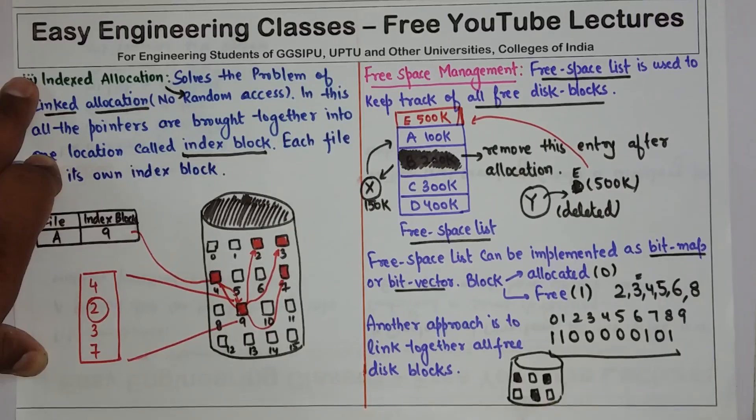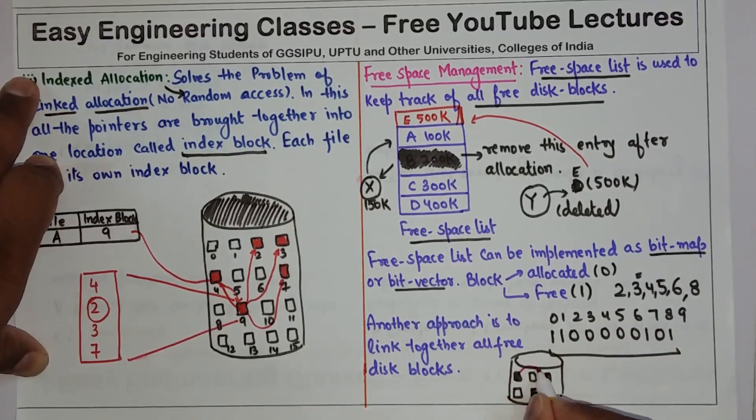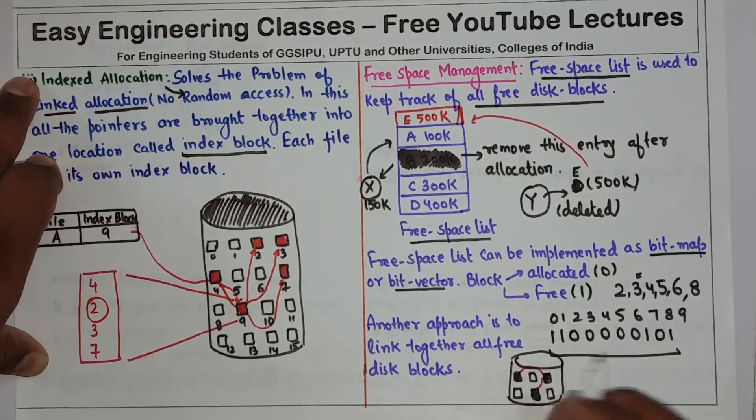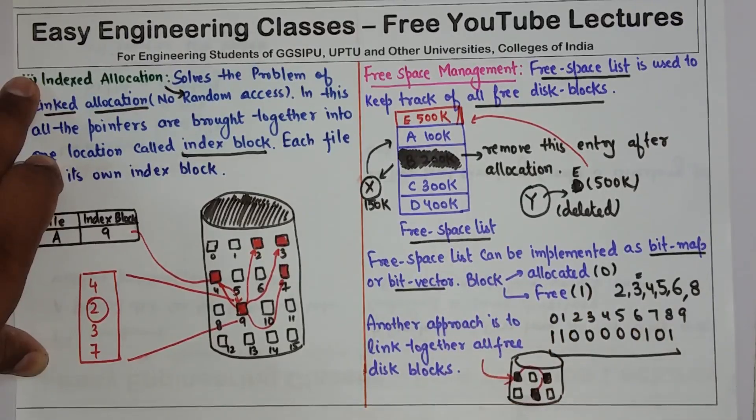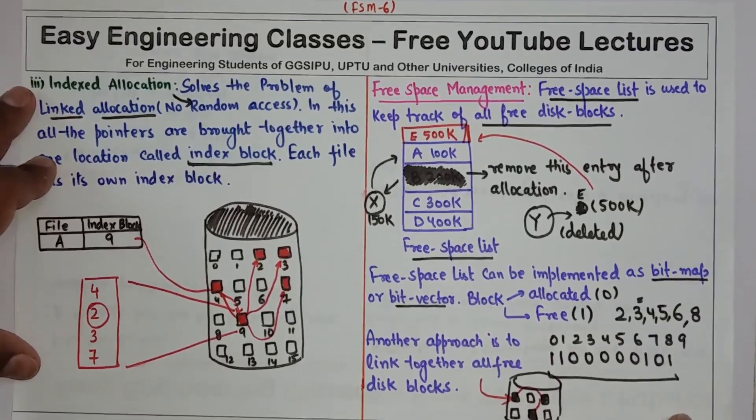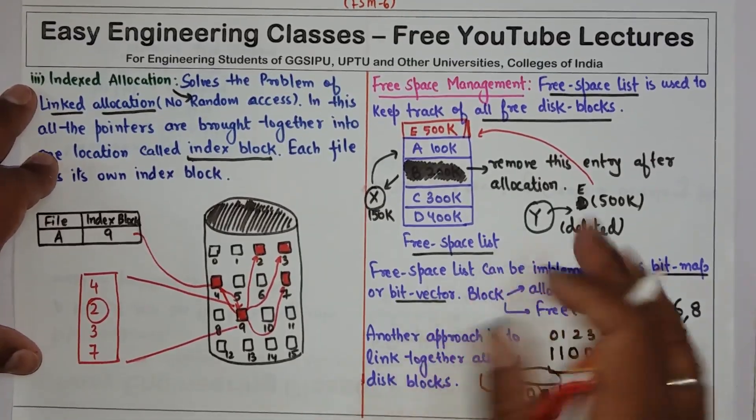So the approach is to link all these blocks, and there will be a pointer in the free space list that will point to the first block of the list. So that is how you can implement your free space management.